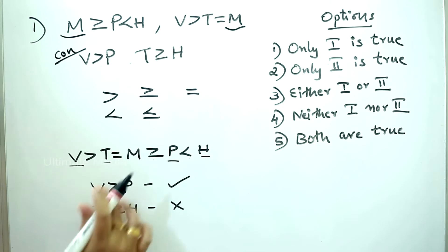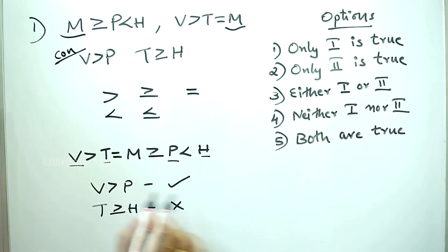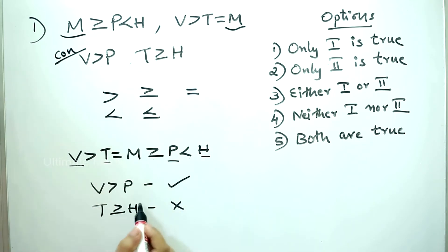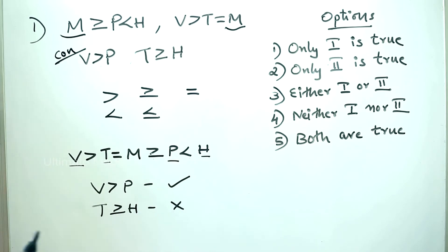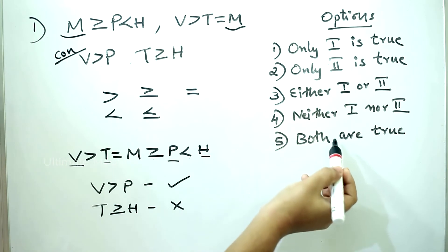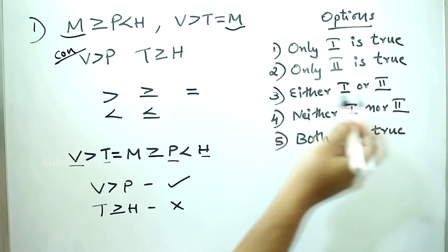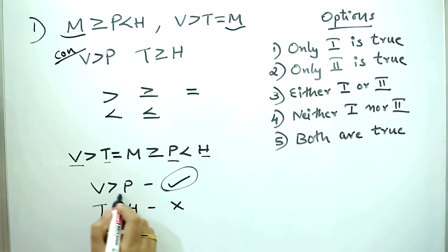We have combined that. Let's look at a formula. We are doing the sign in the direction — that is the way we are doing this. Here is true: T is greater than or equal to H. Here is a sign in the opposite direction — that is the second one, false sign. Options: only one conclusion is true, only two is true, either one or two is true, neither one or two is true, both are true. We get the first conclusion — one is the answer.